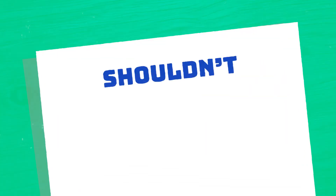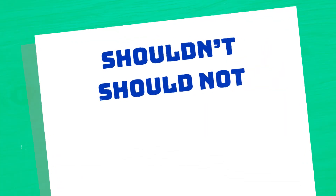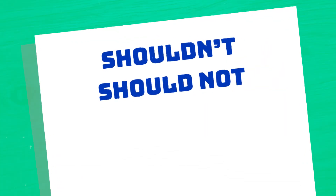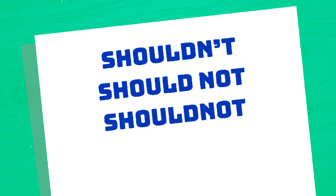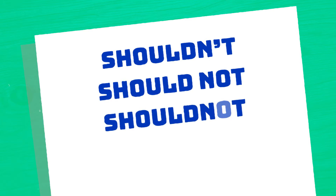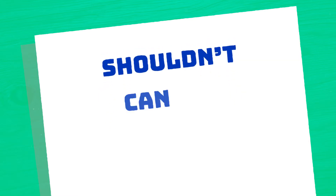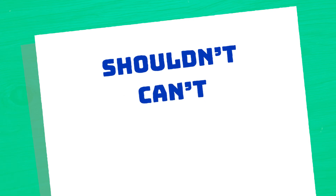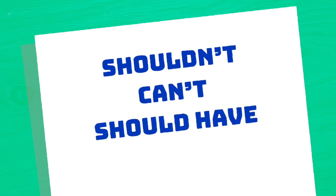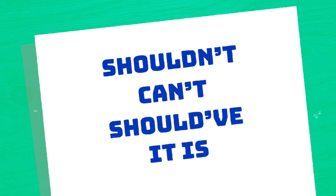Let's look at the contraction 'shouldn't'. It means 'should not' but I've contracted it into one word. Instead of 'should not' as one word, I've dropped out the O and that's where I pop in my apostrophe. It's the same with 'cannot' and 'can't', 'should have' and 'should've', 'it is' and 'it's'.